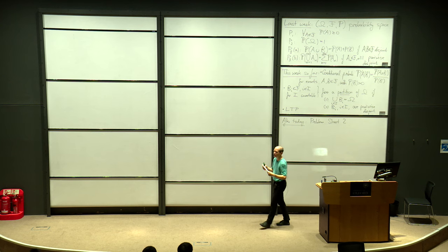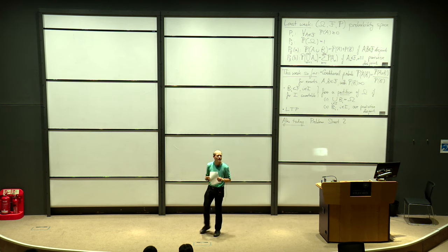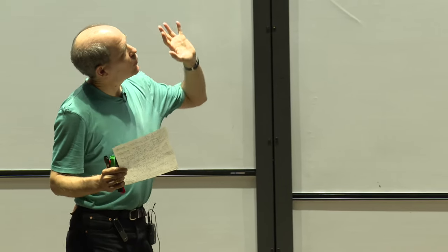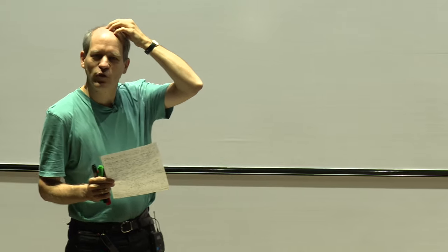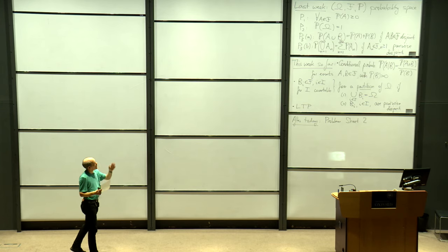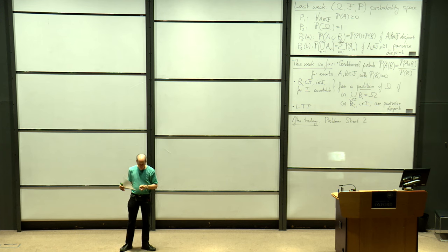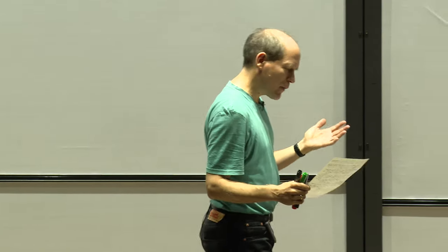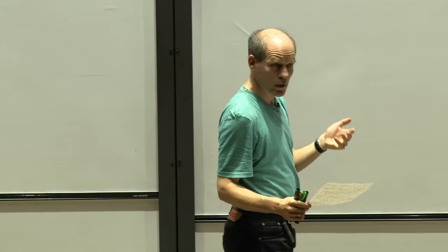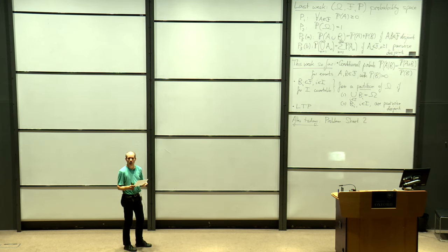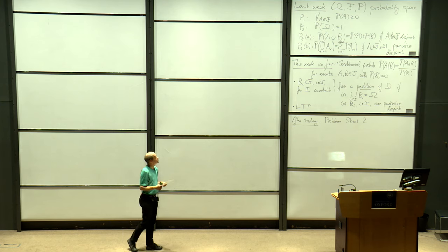Let's get started. We started off doing some counting in the context of a probability space — first where all outcomes were equally likely, and then in a more general context where we had axioms that needed to be satisfied by a probability function.